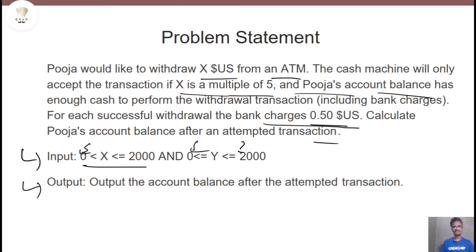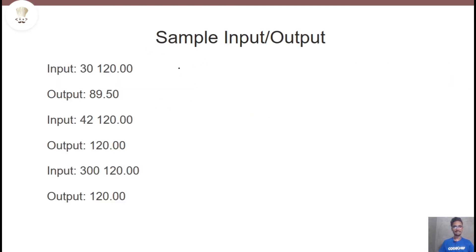The problem statement is very clear — there is nothing much to explain. Just notice some important information: X is the money she wants to withdraw from her account, and she will only be able to withdraw if the amount is a multiple of 5. Also, the bank charges 0.50 US dollars. Looking at the sample input and output: the input is 30 and 120, where 120 is the account balance and 30 is the value she wants to withdraw. The output is 89.50.